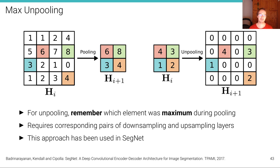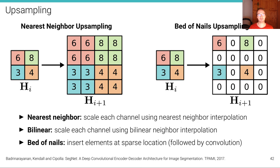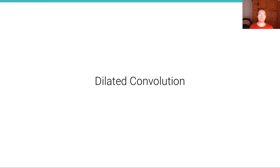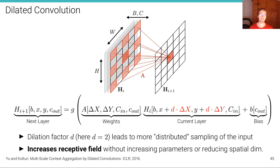Max unpooling requires corresponding pairs of downsampling and upsampling layers, so it cannot be implemented in any arbitrary U-Net architecture. However, this is the approach used in one of the foundational neural network encoder-decoder architectures for semantic segmentation. Another alternative to upsampling is to use dilated convolutions. For dilated convolutions, you don't need to downsample at all, because dilated convolutions increase the receptive field size while keeping the spatial resolution of the feature maps constant.